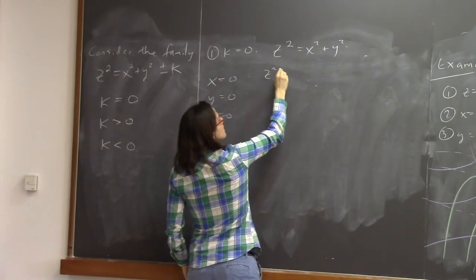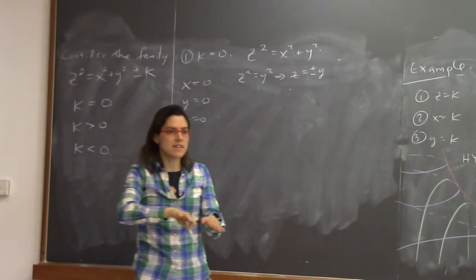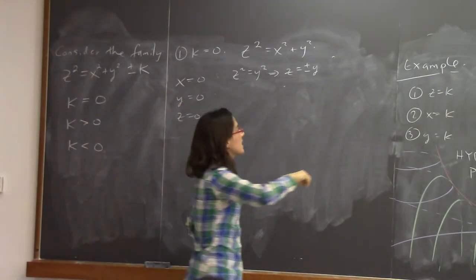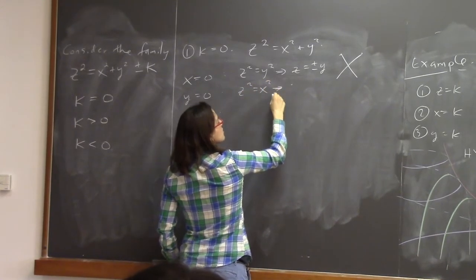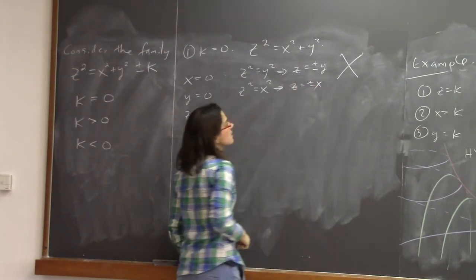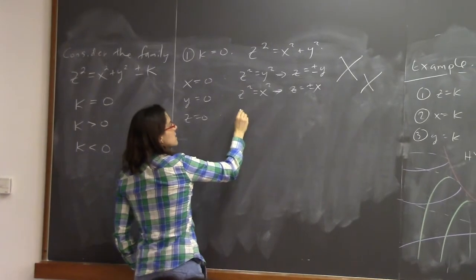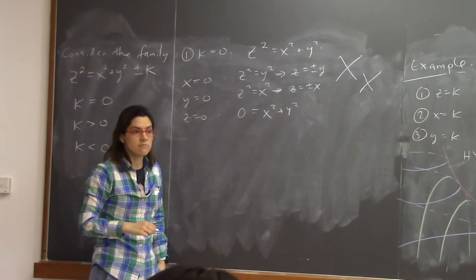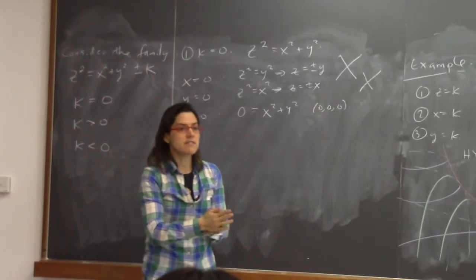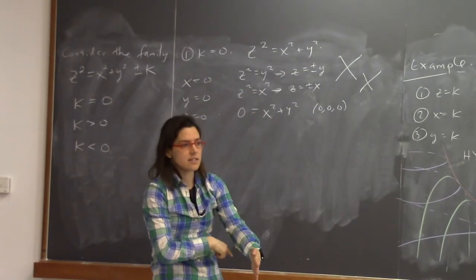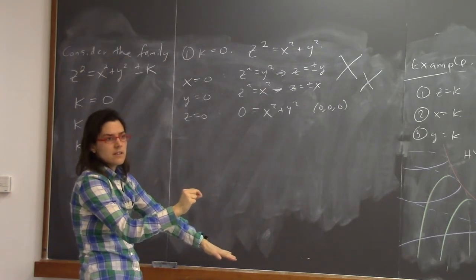First, k equals 0: z squared equals x squared plus y squared. If x equals 0, we get z squared equals y squared, so z equals plus or minus y — that's like two lines making an X shape. If y equals 0, we get z squared equals x squared, so z equals plus or minus x — again an X shape. If z equals 0, we get 0 equals x squared plus y squared — just one solution, the single point (0, 0, 0).